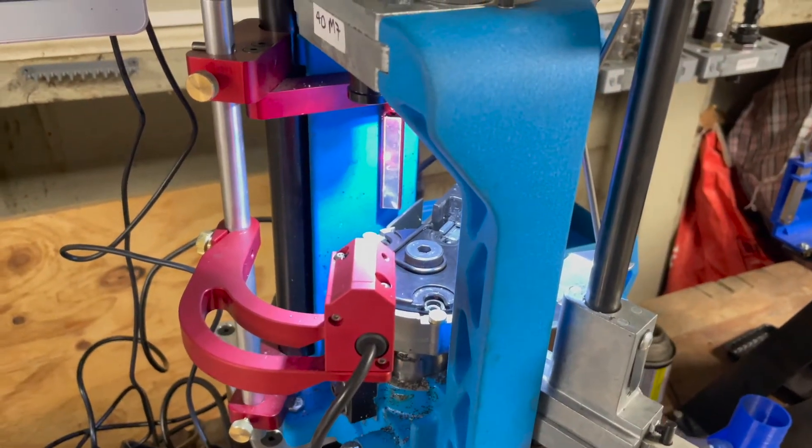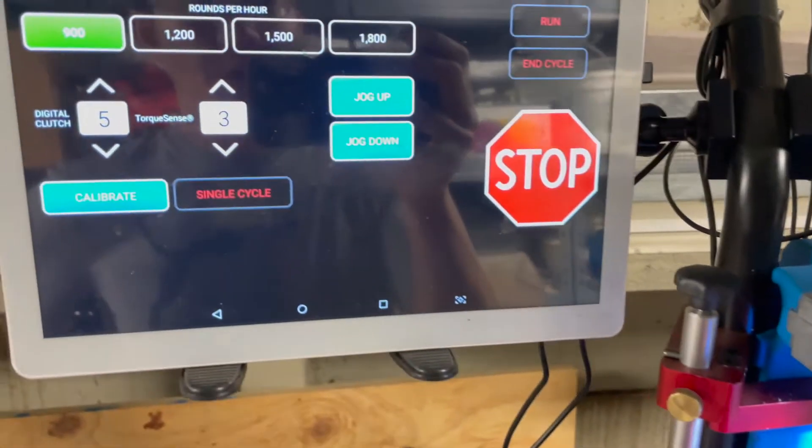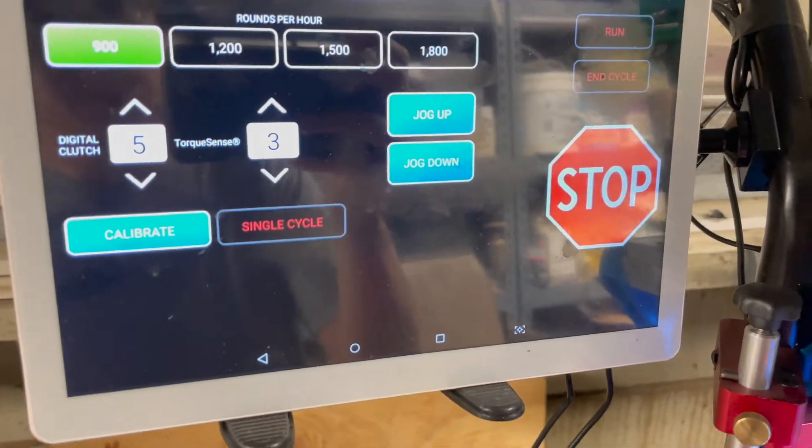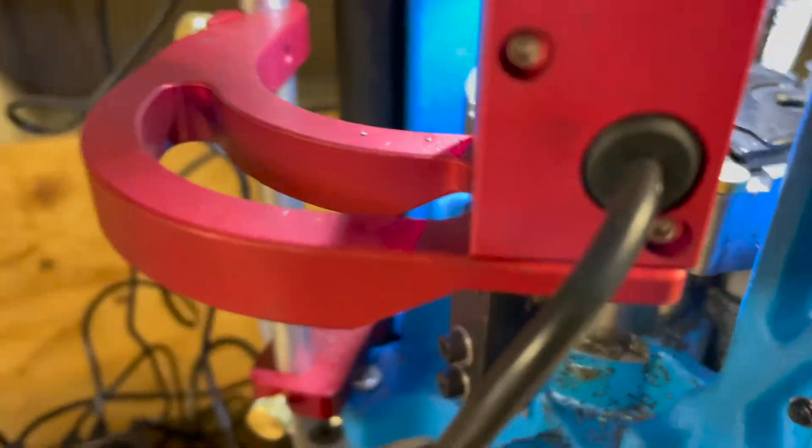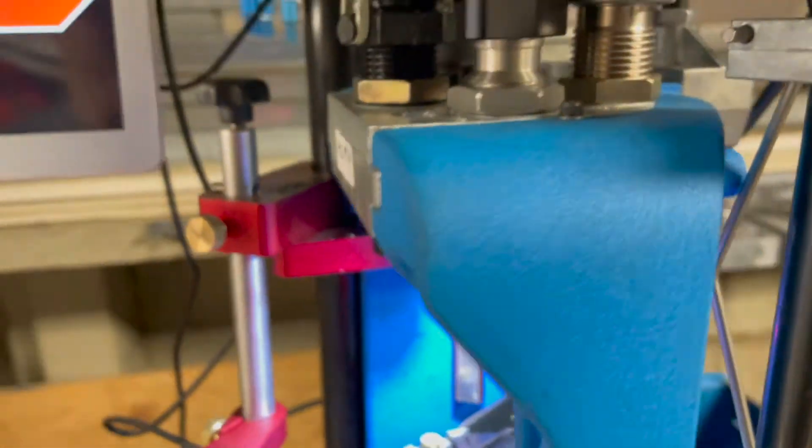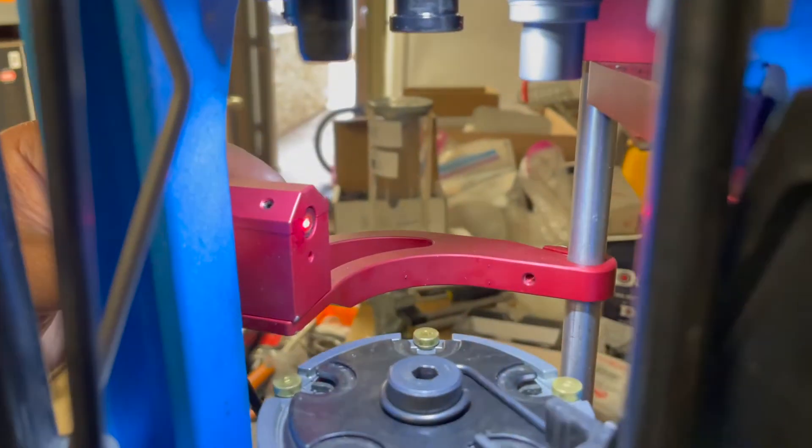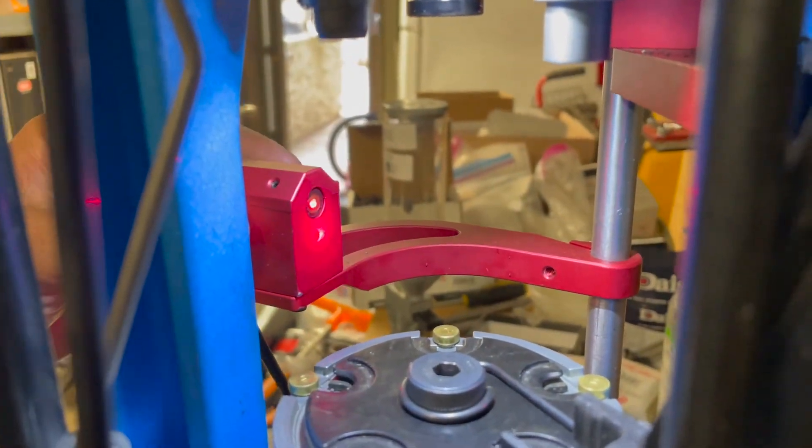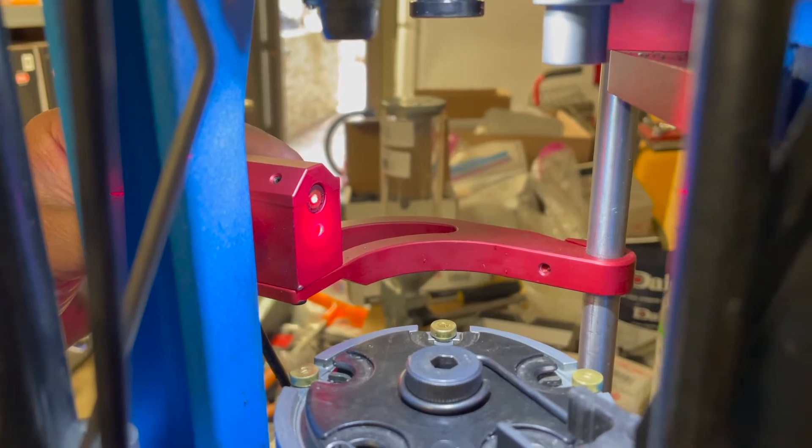When you first turn on Mark 7, it won't let you run until you calibrate it. The most important thing of calibration: it needs to find the bottom, the top position, and also this bullet sensor needs to be lined up correctly. So you make sure the laser goes back to the hole.